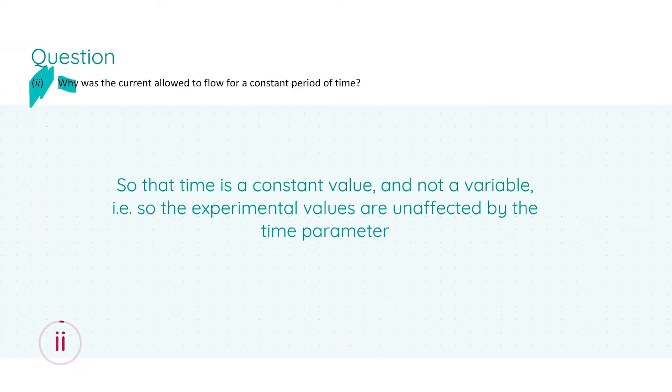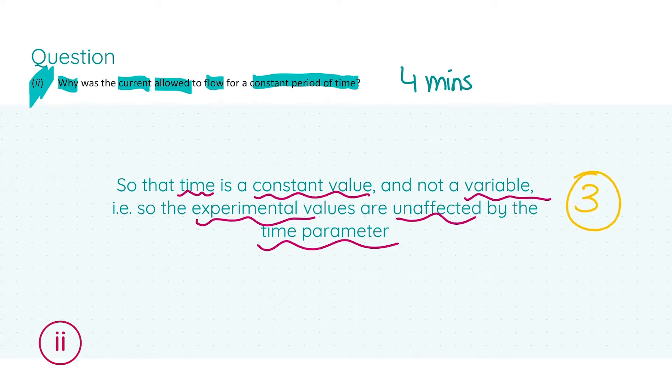So moving on to part two, we are asked why was the current allowed to flow for a constant period of time? And we're told that this constant period of time is four minutes. The reason is as follows. So that the time is a constant value in the experiment, and it's not a variable. So in other words, the experimental values are unaffected by this time parameter, and it stays the same throughout the experiment. As in this experiment, we are looking at the change in temperature due to the heat energy emitted by a wire with a constant current passing through it. Now, this explanation will get you three marks.